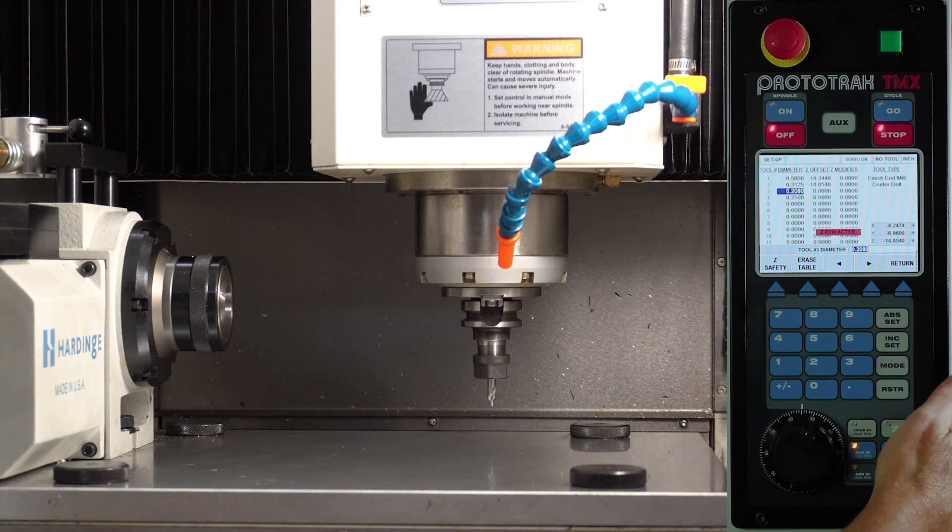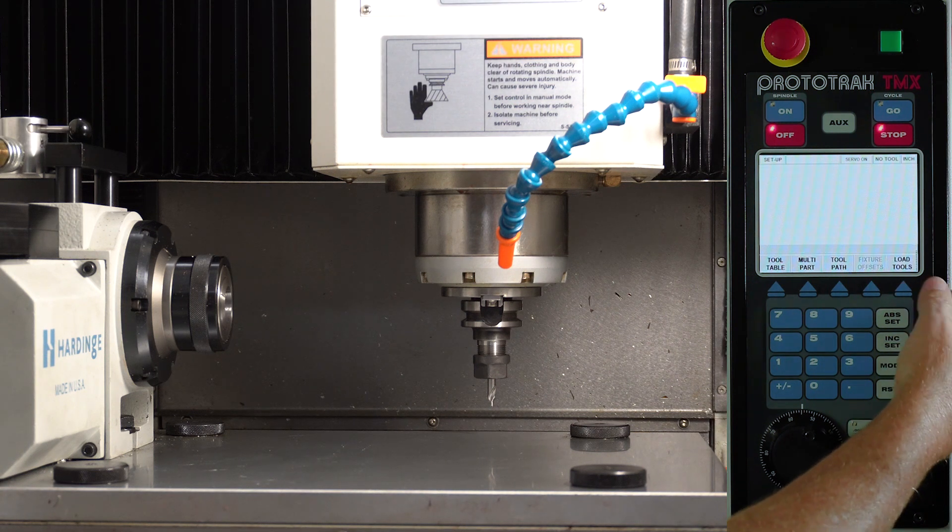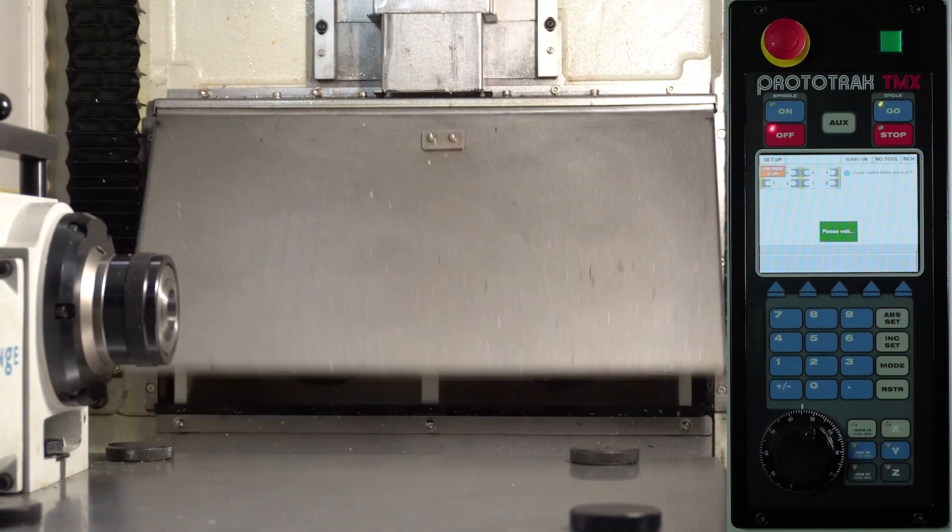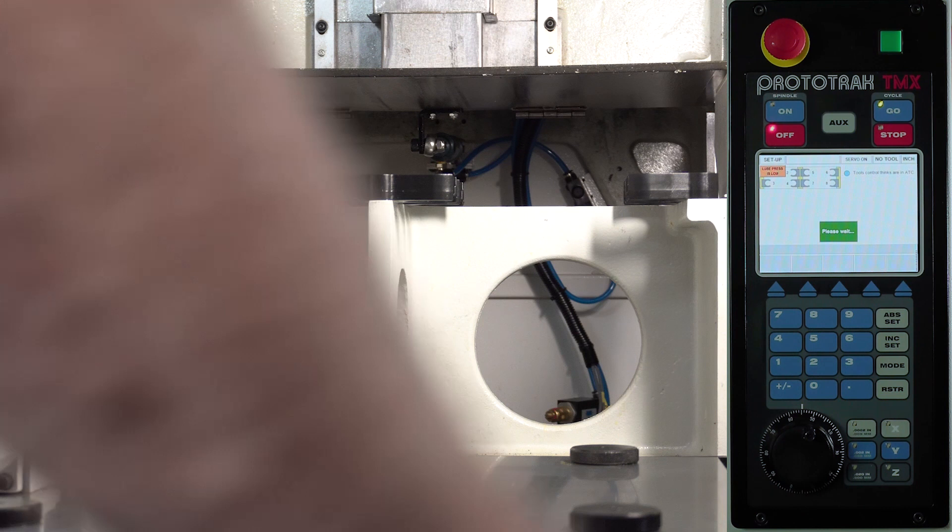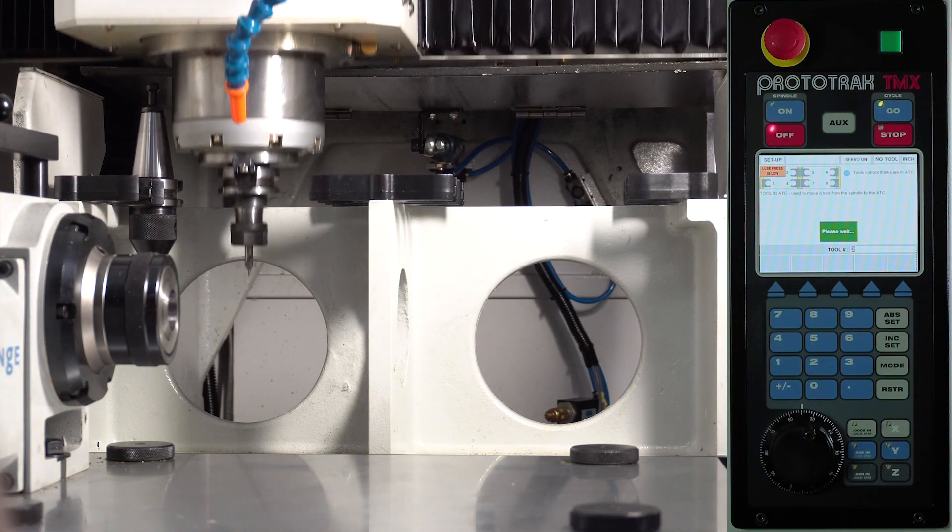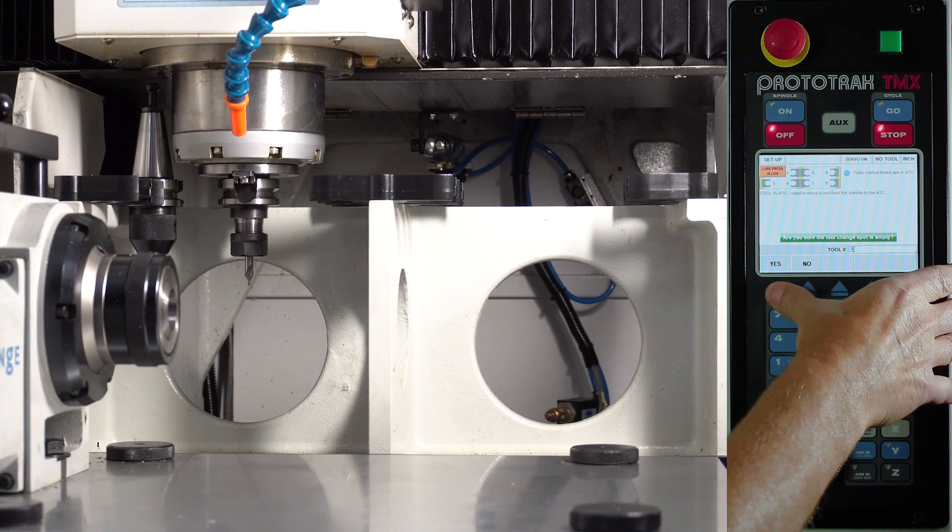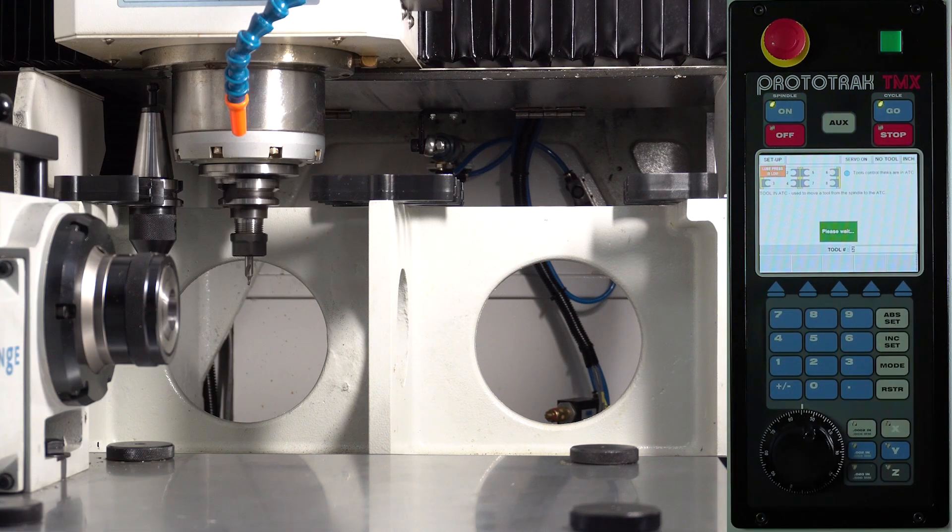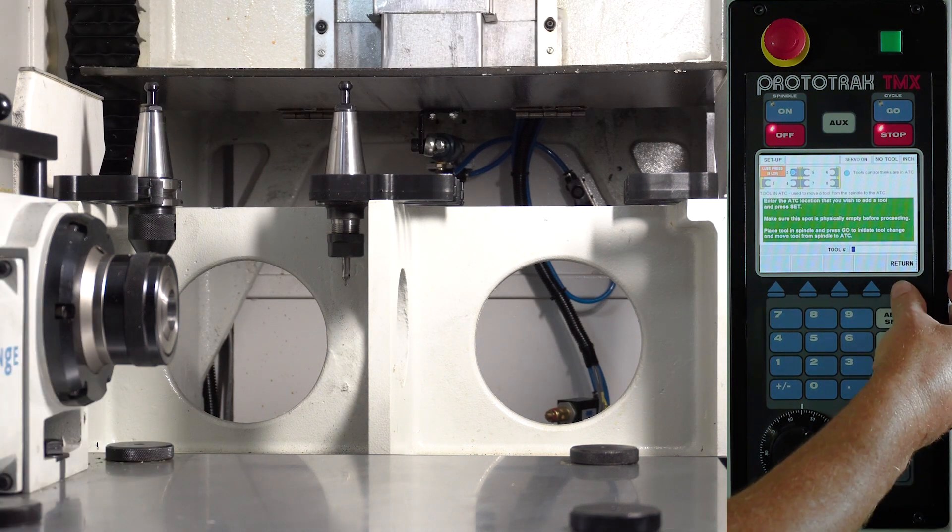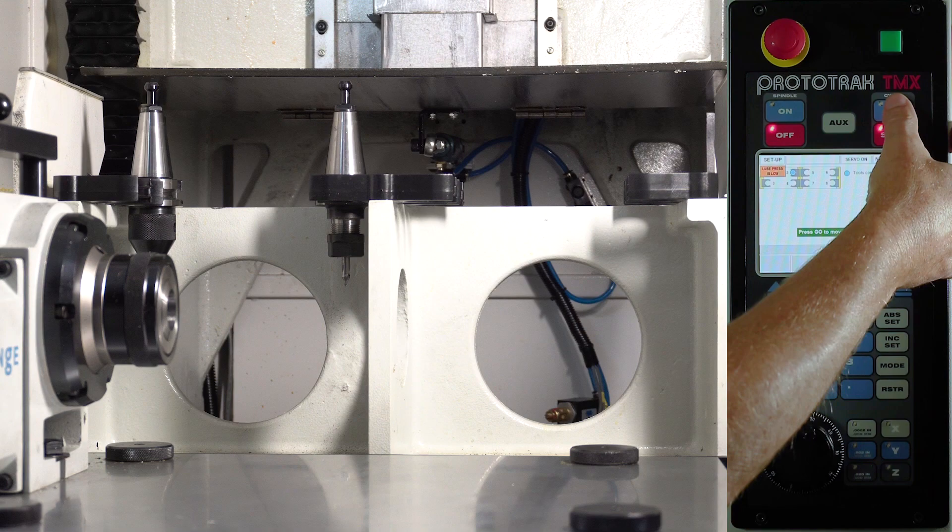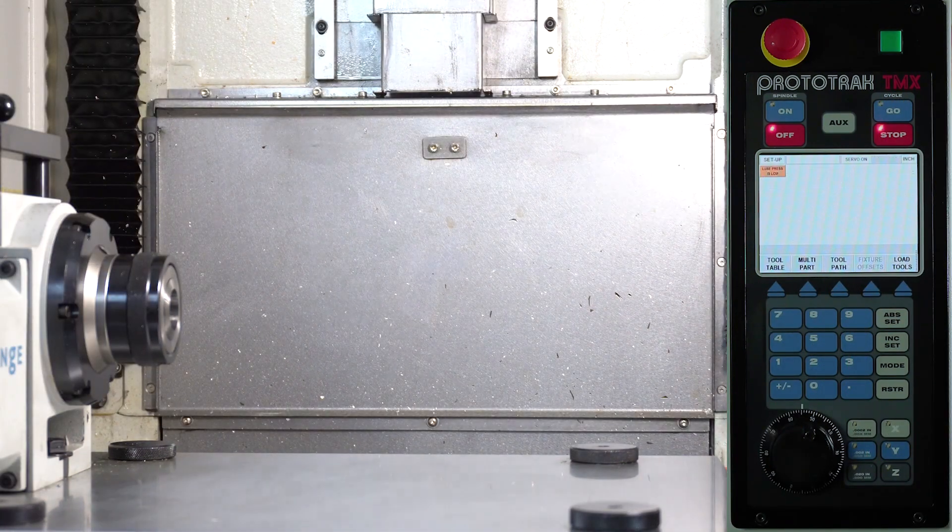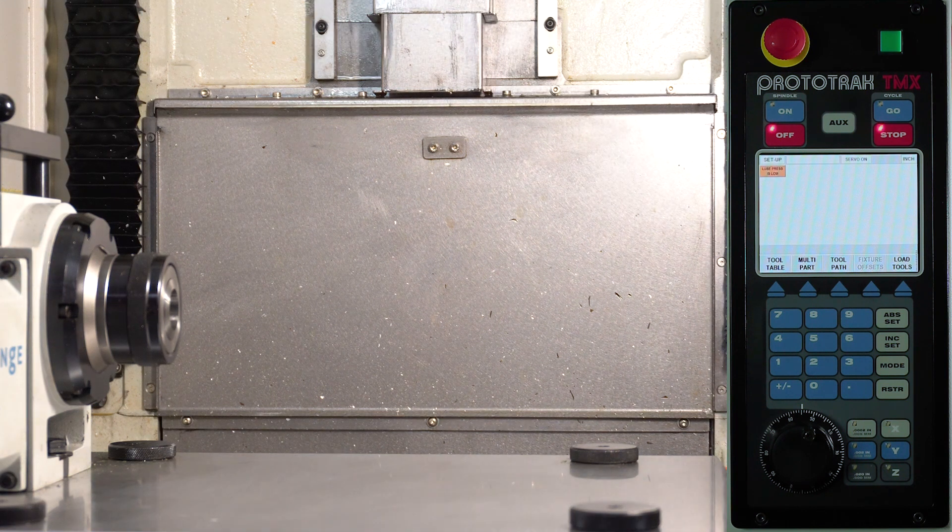I'm just going to hit return, go to load tools, push go, tell it I'm putting a tool in. It's tool number two, push go, yes that spot is empty, one more time push go, then return and go puts the tool table back.